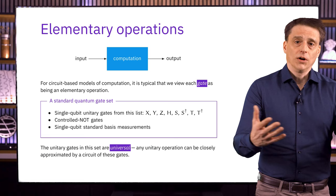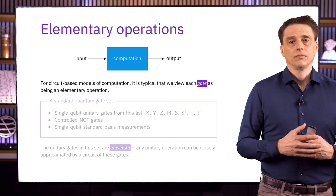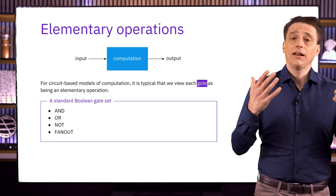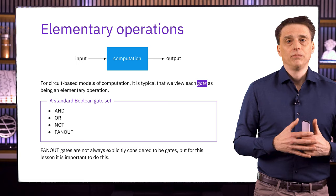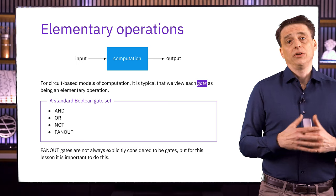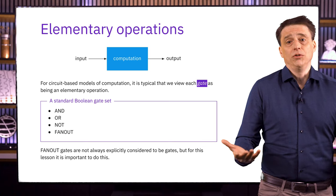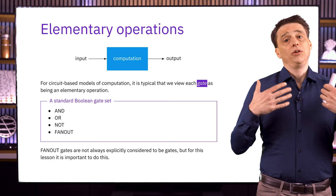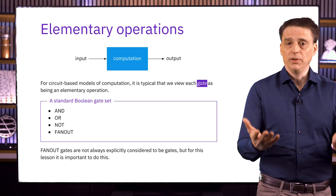For Boolean circuits, we're going to consider these four gates to be elementary operations: AND gates, OR gates, NOT gates, and FANOUT. FANOUT is not always counted as being a gate, but it's going to be important for us to do this, as we will see later in the lesson. Similar to our standard quantum gate set, this set is a little bit redundant — you don't need both AND and OR. You can create either one using the other with three NOT gates. But it doesn't hurt to include both. This is a universal gate set for deterministic computations, meaning that any function from bits to bits can be implemented with a Boolean circuit composed of gates from this collection.